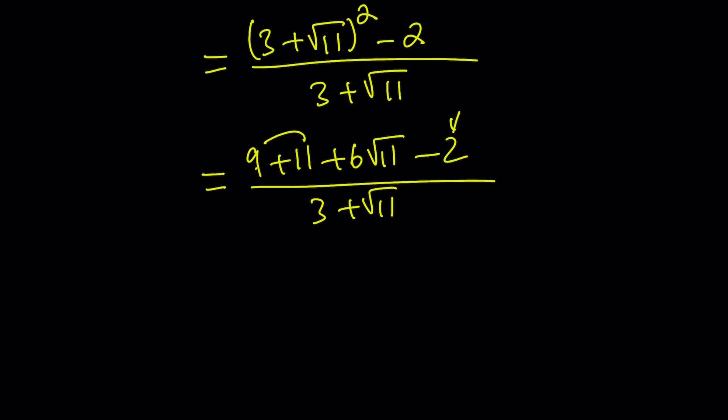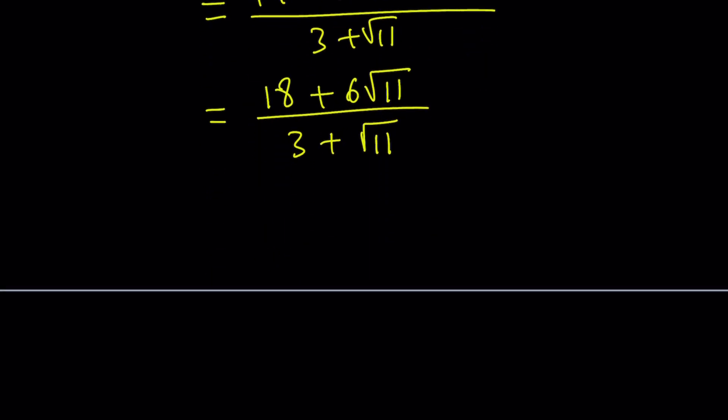So the numerator becomes 18 plus 6 root 11 divided by 3 plus root 11. Hopefully you see what I see here. We can factor out a 6 in the numerator, and we have 3 plus root 11 inside the parentheses. And guess what?